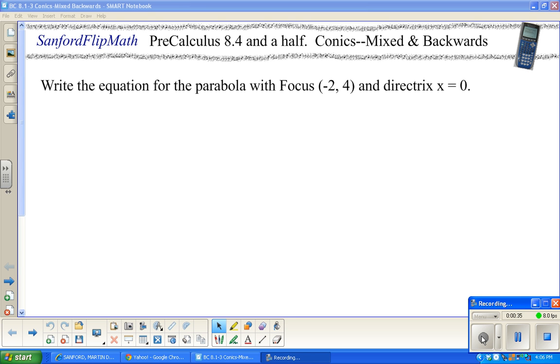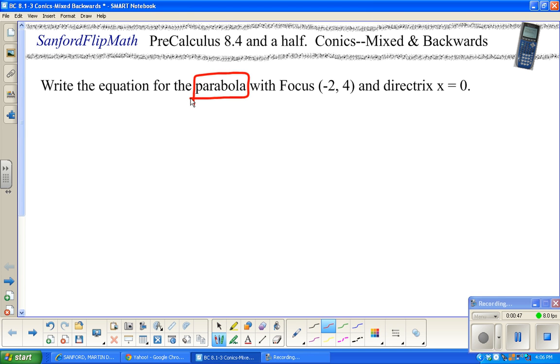The example you see up here, we're probably going to do just four examples. There's not a lot of background, so this one should be fairly quick. It says write the equation for a parabola with focus negative 2, 4, and directrix x equals 0, also known as the y-axis.